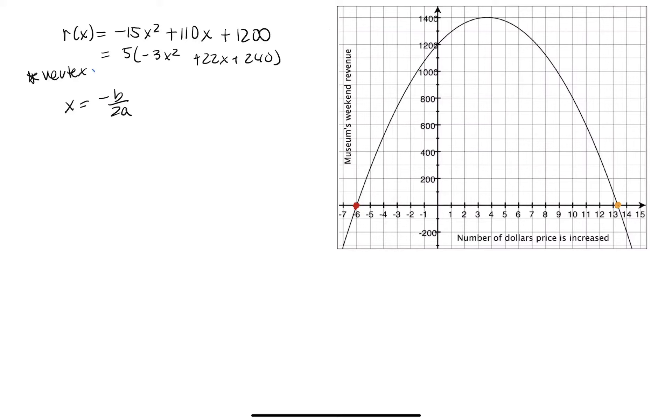And I'm going to give myself a little more space for this. There we go. So again, b is equal to 22, a is equal to negative 3. So let's go ahead and fill in these numbers. Negative 22 over 2 times negative 3.